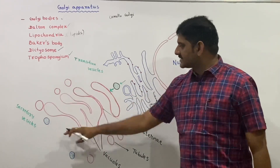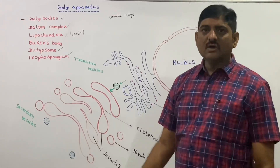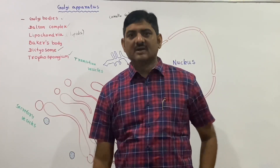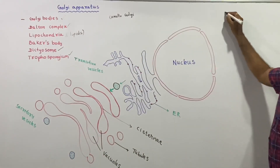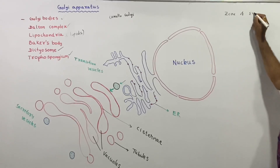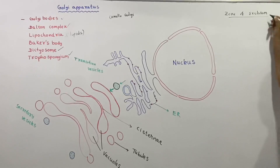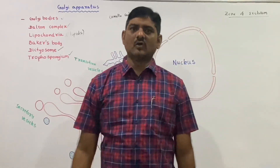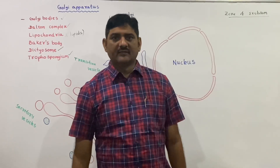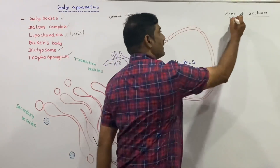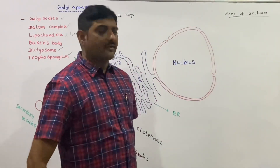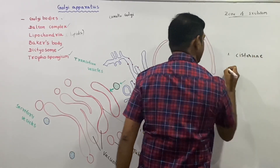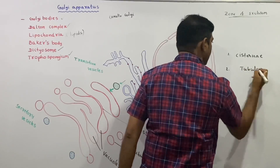In the study of the Golgi apparatus, the surrounding region of the cells is called the Golgi ground substance, and there is a zone of exclusion around it. The cytoplasm in this zone is devoid of organelles. Generally, the Golgi complex is surrounded by mitochondria, ribosomes, and chloroplasts within this zone of exclusion.